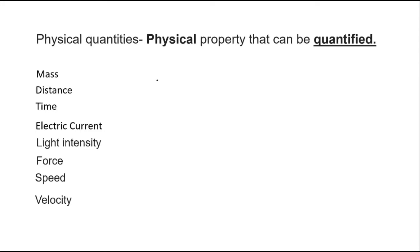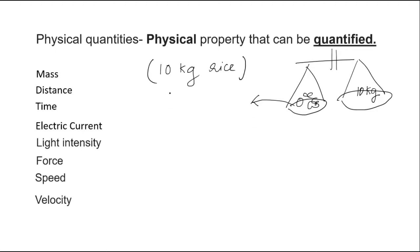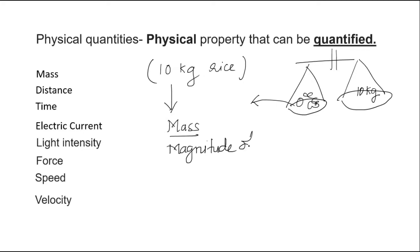If we go to a shop and ask a shopkeeper to give 10 kg of rice, he will weigh 10 kg of rice in his balance and then give the rice. In this sentence, what is the physical quantity? The physical quantity is mass — we describe rice with its physical quantity called mass. And what is the magnitude of mass? The magnitude of mass is 10 kg.